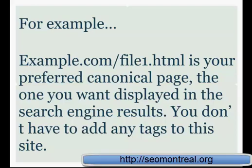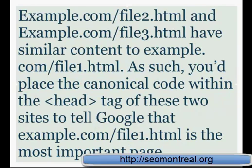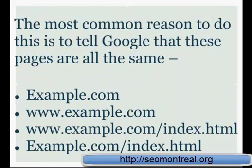For example, example.com/file1.html is your preferred canonical page — the one you want displayed in search engine results. You don't need to add any tags to that page. But for example.com/file2.html and example.com/file3.html, which have similar content, you place the canonical code between their head tags to tell Google that file1.html is the most important one. A common reason to do this is to handle variations like example.com, www.example.com, and www.example.com/index.html all pointing to the same canonical.